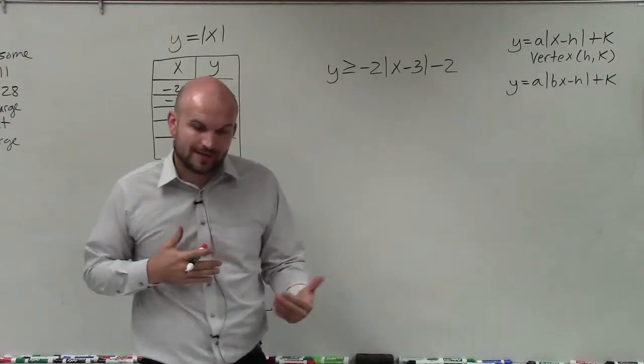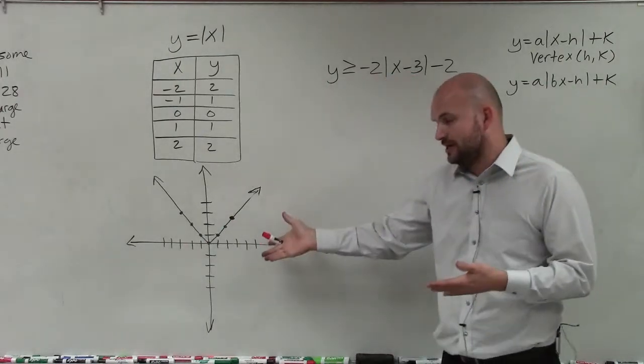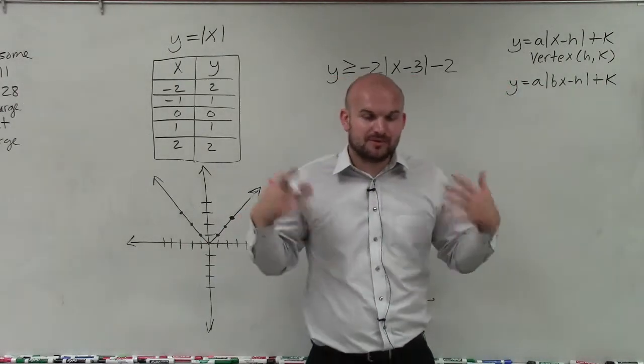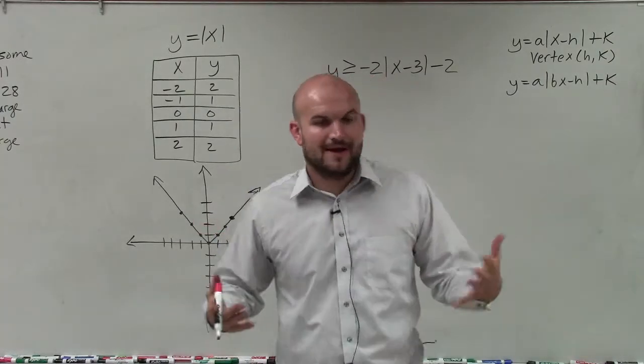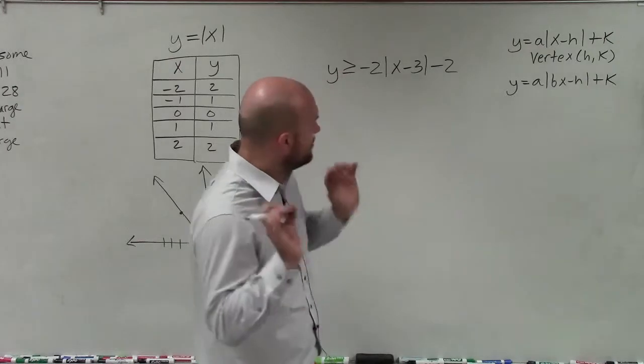So when graphing absolute value inequality, it's very similar to graphing absolute value equation, which I have the parent function over here, the table, as well as the graph. But to graph, we're going to be graphing absolute value equation and then we want to go ahead and test the solution to determine where we're going to shade.